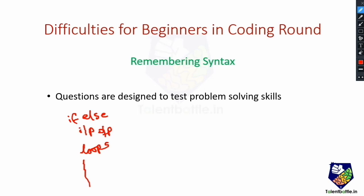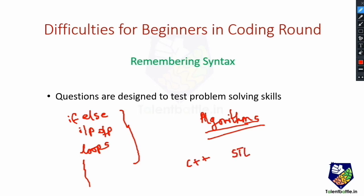Rather than memorizing syntax, I recommend focusing on remembering different algorithms and techniques for the coding round. You can also remember libraries and frameworks in your chosen programming language that provide predefined data structures. For example, in C++ you have the Standard Template Library, and in Java you have the Collections Framework. These help auto-generate code for stacks, queues, trees, and other data structures. You should put effort into remembering the syntax for using these predefined libraries.